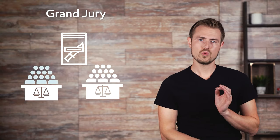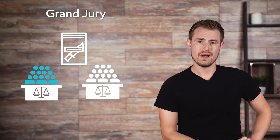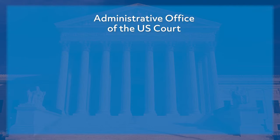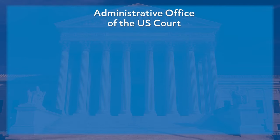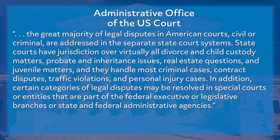If at least 12 of the 23 jurors agree, the Grand Jury indicts the suspect and the case goes to trial. But the federal courts aren't the only court system. The great majority of legal disputes in American courts — civil or criminal — are addressed in the separate state court systems. State courts have jurisdiction over virtually all divorce and child custody matters, probate and inheritance issues, real estate questions, and juvenile matters.